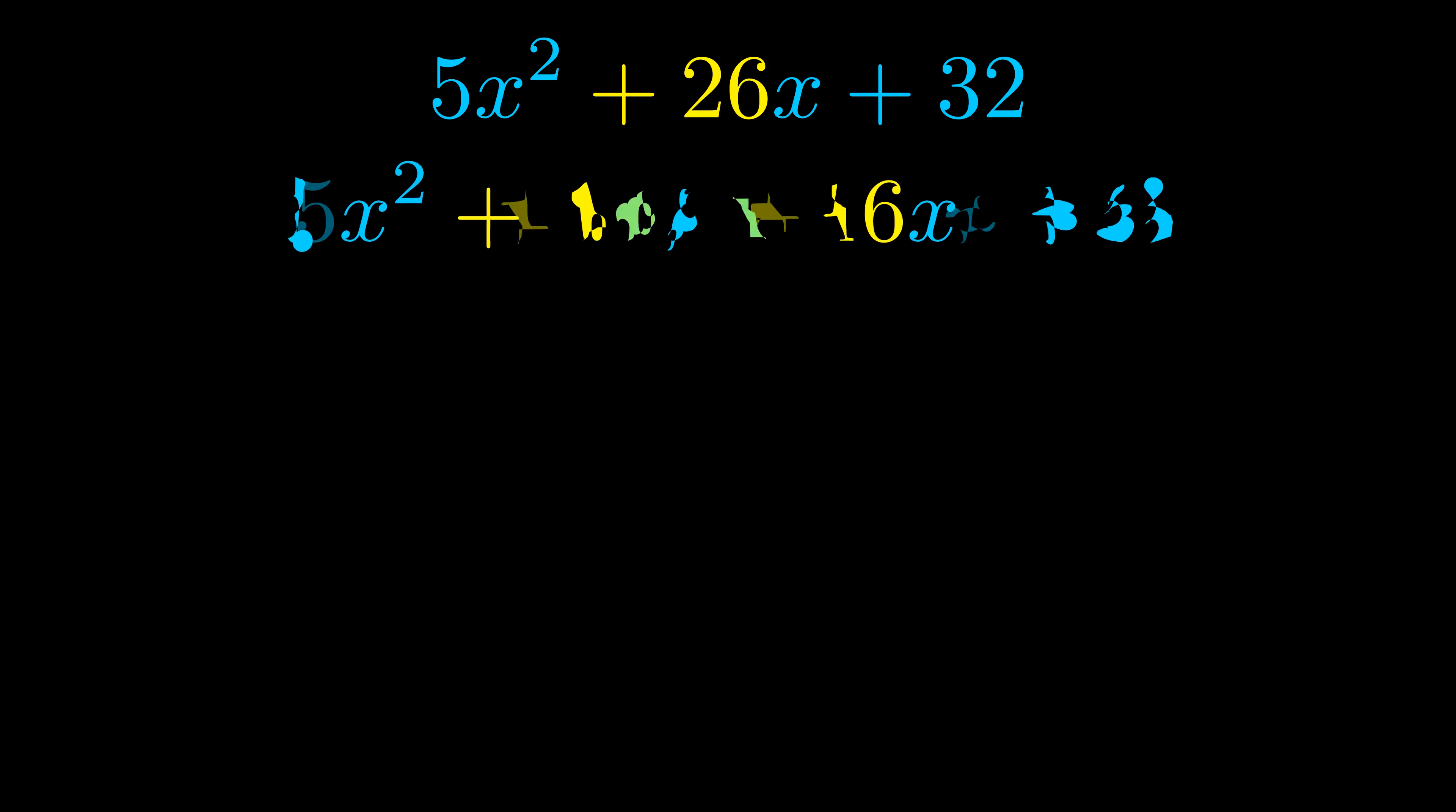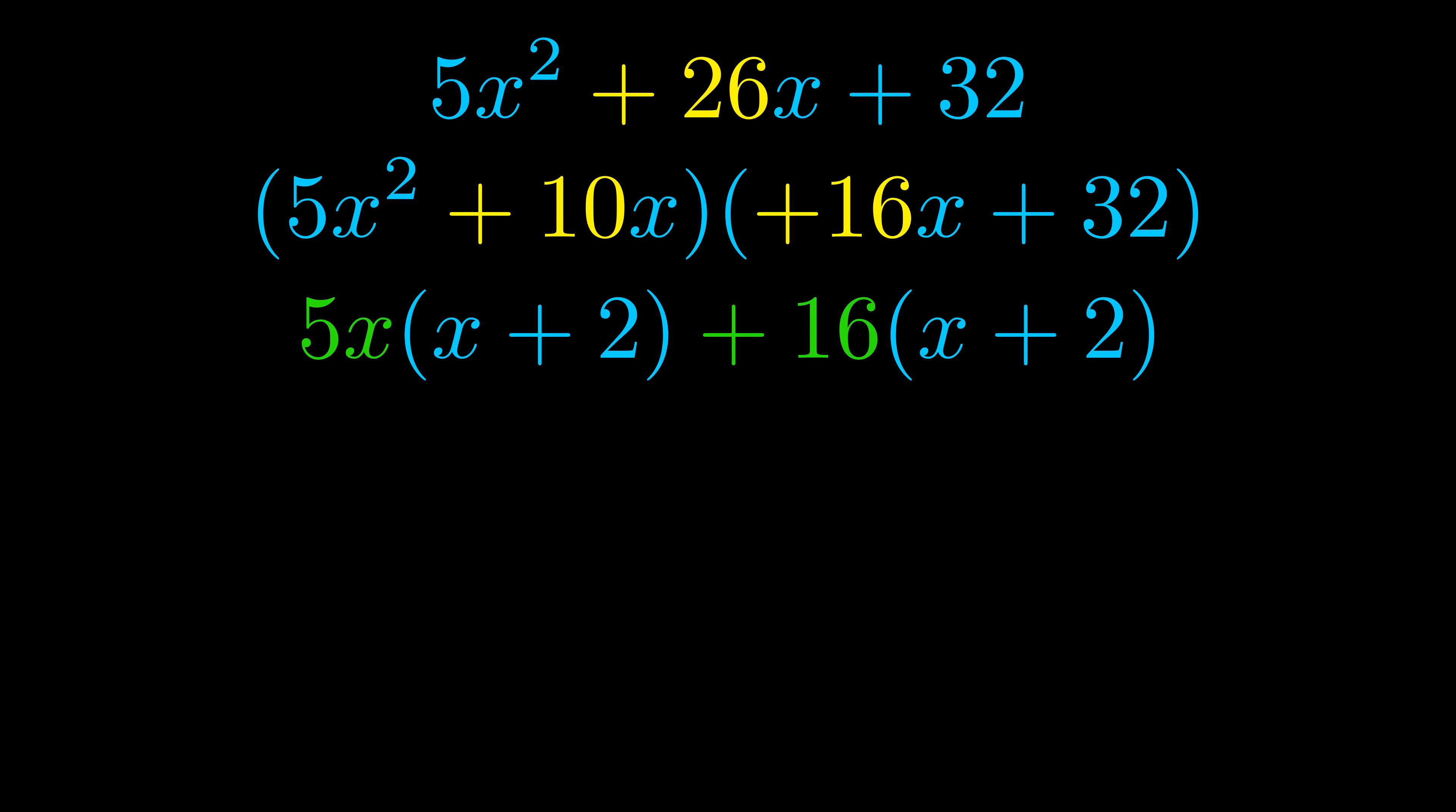Once we've done this we go ahead and put parentheses around the first term and the last term. And we do that so that we can take the greatest common factor out of both terms. We can see the greatest common factor is now outside in green.